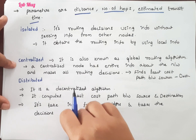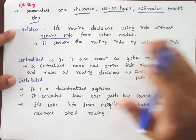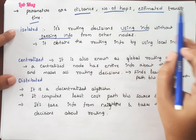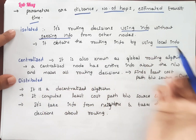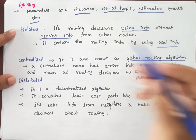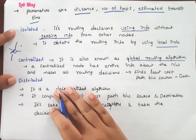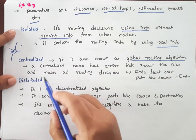In adaptive routing, there are three parts: isolated, centralized, and distributed. In isolated routing, the routing decisions are based only on the information available at that router — based on one router's own info. It obtains routing info from local information — that is known as isolated routing. The next one is centralized, which is also known as the global routing algorithm. In centralized routing, a centralized node contains the entire network information of all the different nodes and makes all routing decisions.